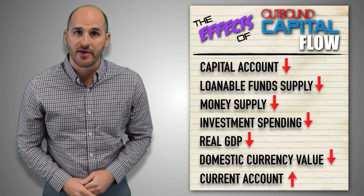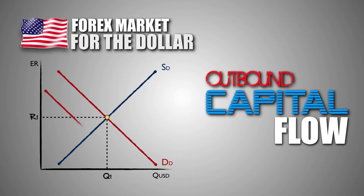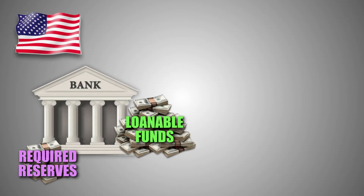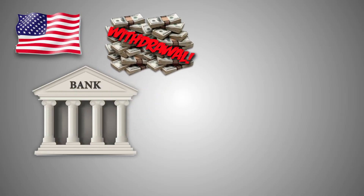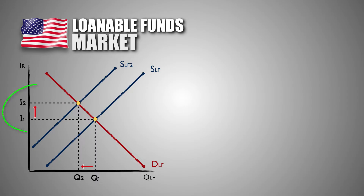Let's walk through the effects of outbound capital flow, one graph at a time. Let's say the United States is experiencing outbound capital flow. As American investors purchase Japanese assets in greater quantities, they are required to convert their dollars into yen in the foreign exchange market. This will decrease the demand for the dollar, causing the exchange rate for the dollar to decrease and causing the dollar to depreciate in value. In order to access their money, American investors will liquefy their assets in domestic banks. As American banks call in loans and use reserves on hand to cover withdrawals, the volume of reserves available for lending decreases. This decreases the supply of loanable funds in the American loanable funds market and drives up American real interest rates.